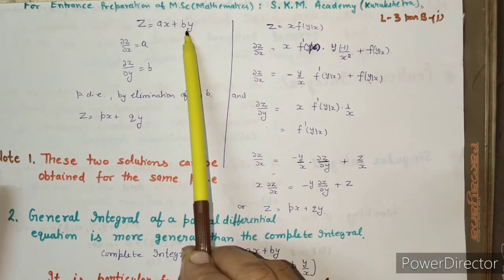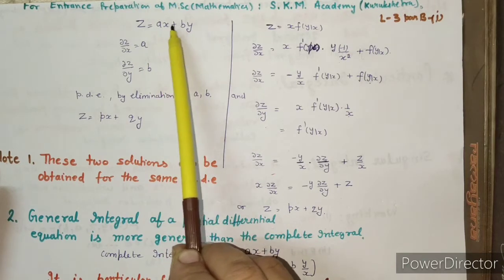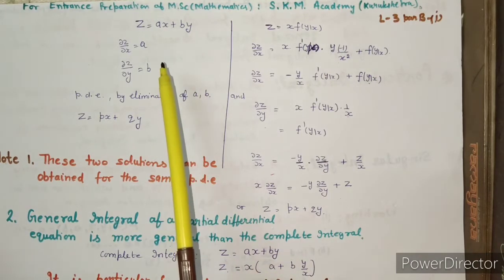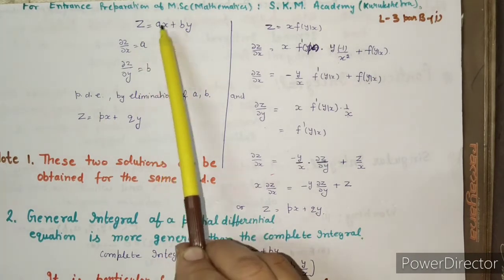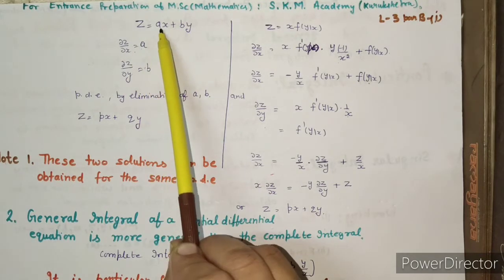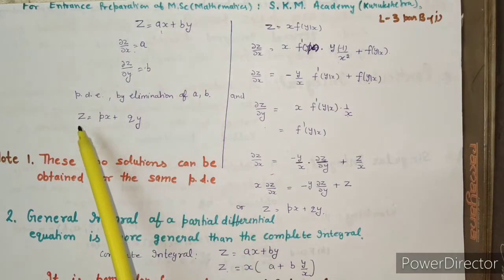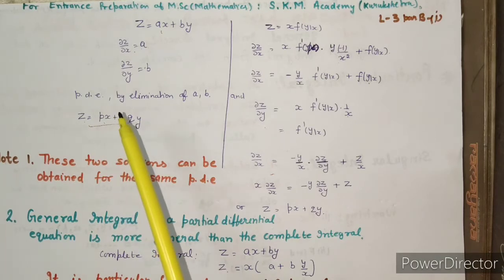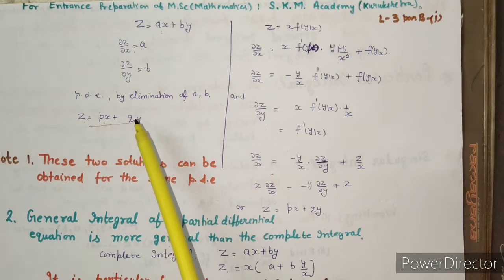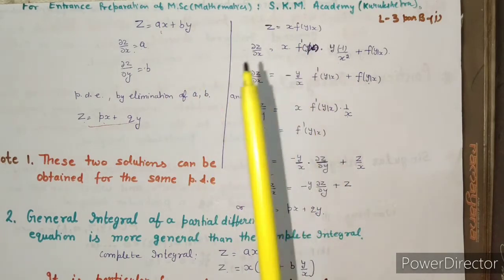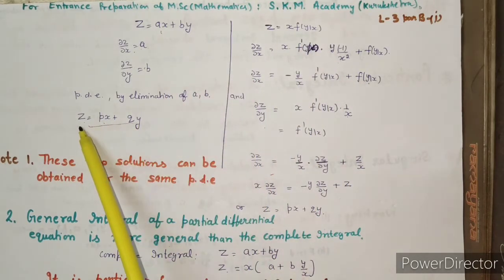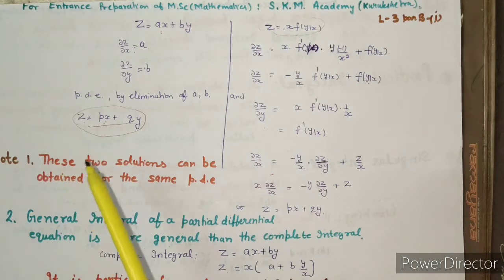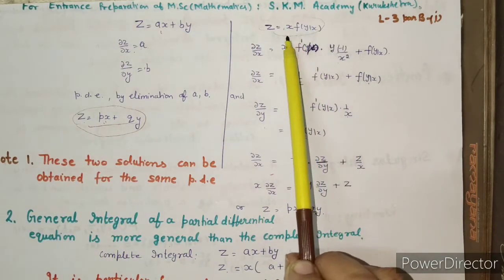So why do we need the general integral? Are these two solutions present in your differential equation? In today's lecture you will get this answer. Now I am recalling lectures one and two — the formation part. If I give you an expression and say that this corresponds to a partial differential equation, there are two arbitrary constants a and b, and x and y are independent variables, so you get a unique partial differential equation.